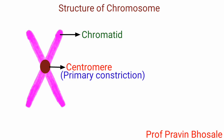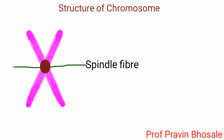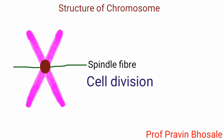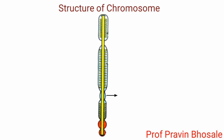The primary constriction consists of a disc-shaped plate called the kinetochore. At this place, spindle fibers get attached during cell division.